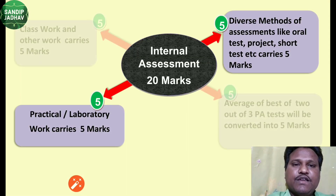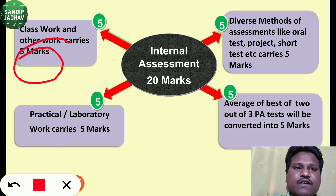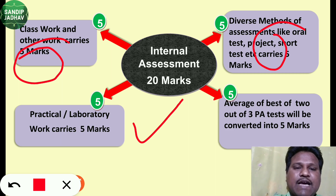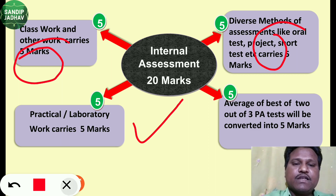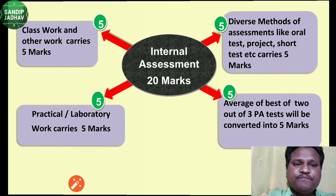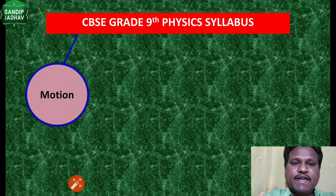The internal assessment is further divided into four sub-components: classwork and other work carries 5 marks; diverse methods of assessments like tests, projects, and assignments carry 5 marks; practical laboratory work carries 5 marks; and the average of the best two out of three periodic assessments is converted into 5 marks. In this way, the 20 marks of internal assessment will be calculated.